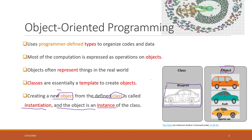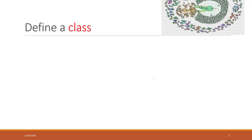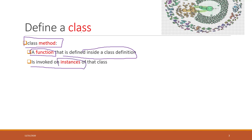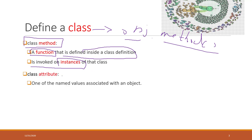A class has methods, which are like predefined actions. A method is actually a function defined inside of the class. We can combine functions together with classes — within each class we can define specific functions. Those methods are invoked on an instance of the class. Classes also have attributes, which are named values associated with those objects. Once we define a class and create objects from it, those objects can call both methods and attributes.